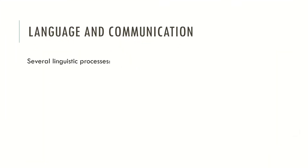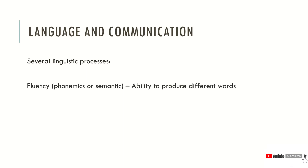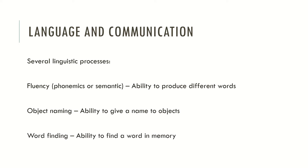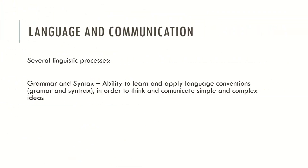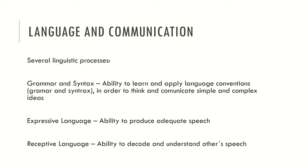There are also several linguistic processes. Fluency, which may be phonetic or semantic, is the ability to produce different words. Object naming is the ability to give a name to objects. Word finding is the ability to find a word in memory and use that word within a given sentence. Grammar and syntax, from the neuropsychological perspective, may be viewed as the ability to learn and apply language conventions in order to think and communicate simple and complex ideas. Expressive language may be viewed as the ability to produce adequate speech. And receptive language, also from the neuropsychological perspective, may be viewed as the ability to decode and understand others' speech.